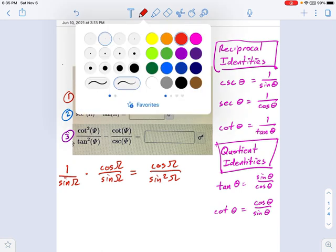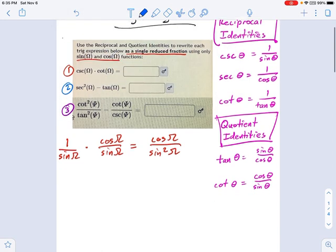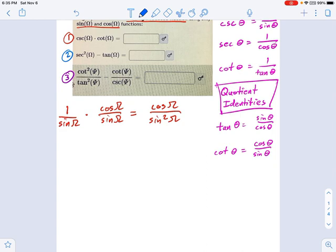Moving on to number two, let's see, what do we have here? Secant squared minus tangent squared. So when I see secant, I think, oh, that's just 1 over cosine. And because it's secant squared, it's really 1 over cosine squared. And that's going to be minus tangent. Well, by the quotient identity over here, tangent is sine over cosine. So I have sine over cosine. And this is something I can almost do right now. It's just that the denominator on the right needs a little bit of work.